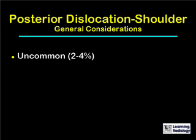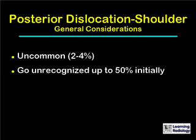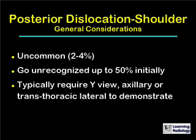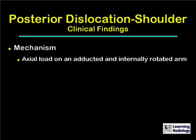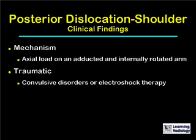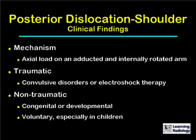Posterior dislocations of the shoulder are relatively uncommon — they not infrequently go unrecognized in up to 50% of patients initially. They typically require another view besides a frontal view, such as a Y view, an axillary, or a transthoracic lateral, in order to be demonstrated. Posterior dislocations are produced by axial loads on an adducted and internally rotated arm, and they are usually traumatic. They can also occur with convulsive disorders or with electroshock therapy.